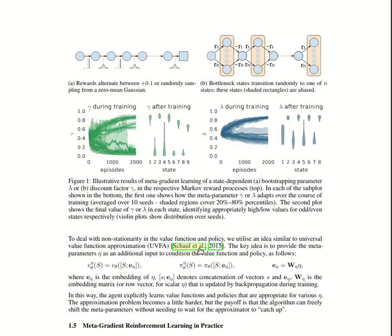Another thing pointed out in this paper is a problem that arises when you learn hyperparameters during training: the network may have trouble keeping up, because you're training it with a target value calculated using specific hyperparameters like a specific gamma, and then that target moves as you change them. To avoid that, they also give the network the current values of the hyperparameters as input, so the network learns to approximate the true value as a function of these hyperparameters, receiving them in real time as they change.